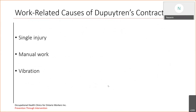In terms of the work-related causes of Dupuytren's Contracture, there are three significant risk factors that have been talked about and researched: single hand injury, manual work, and vibration.